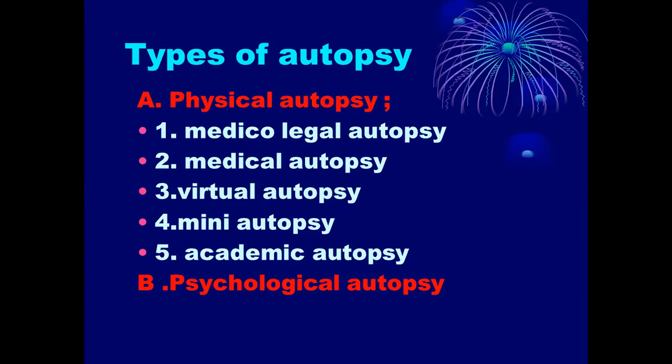There are many types of autopsies. We can divide them into two main types: physical autopsy and psychological autopsy. Physical autopsy is further divided into medical legal autopsy, medical autopsy, virtual autopsy, and academic autopsy. In the coming lectures, only medical legal autopsy will be discussed in detail, because in our country only medical legal autopsy is conducted.